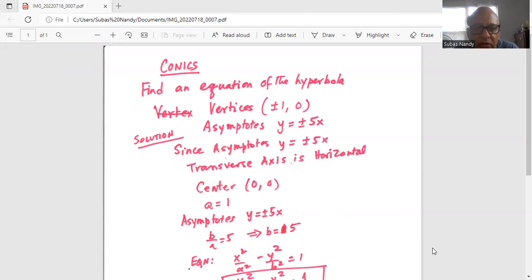Asymptotes is y equal to plus minus five x, which means the term five is equal to b over a, so that is equal to five. Since a is equal to one, therefore b equals five.